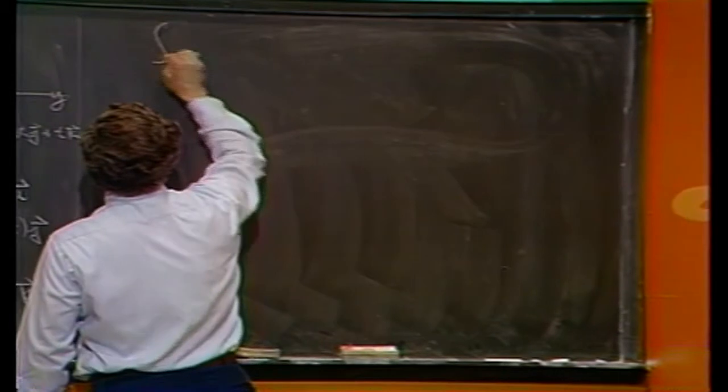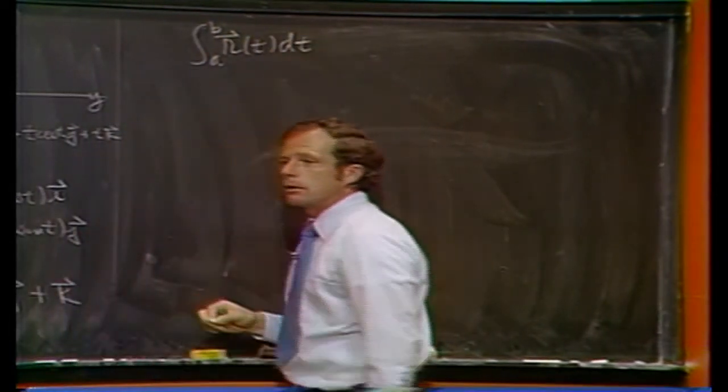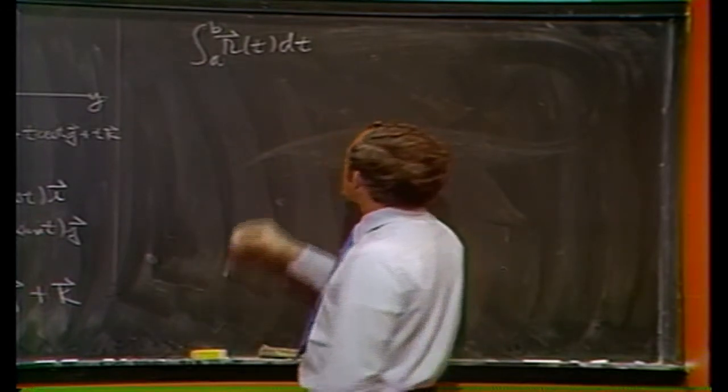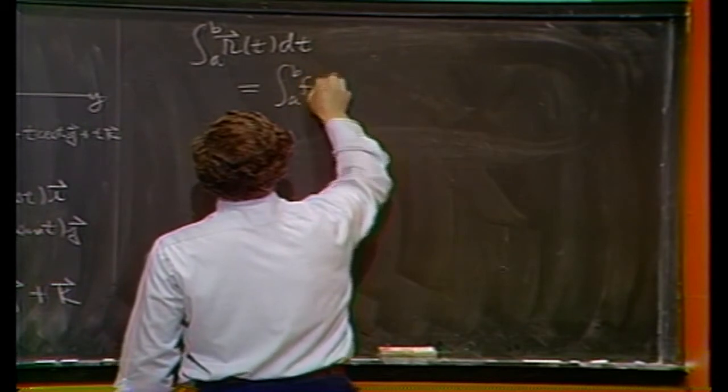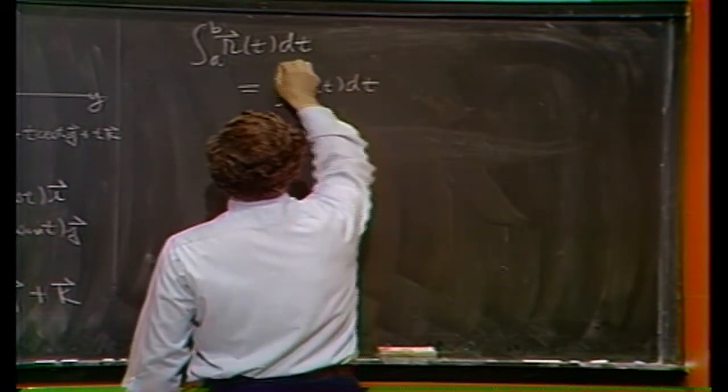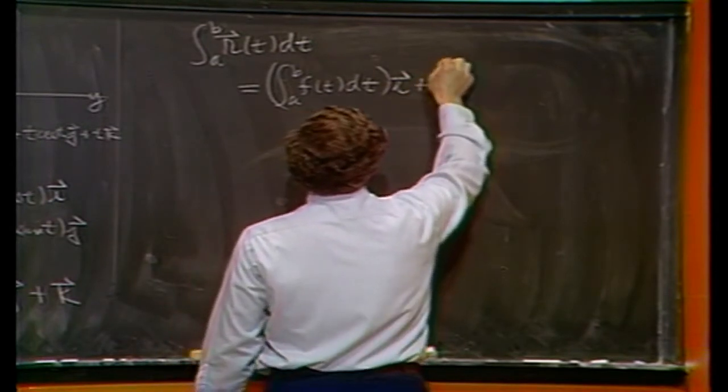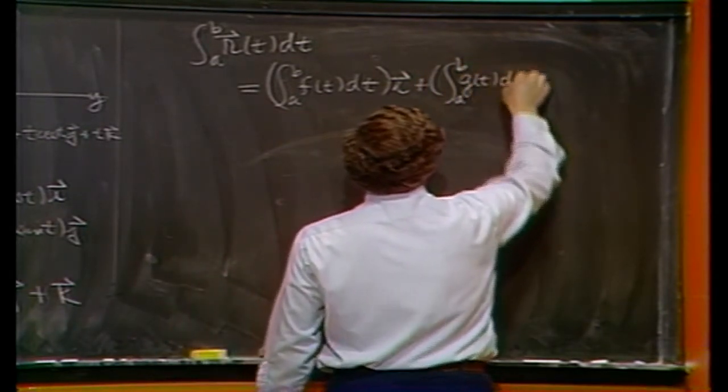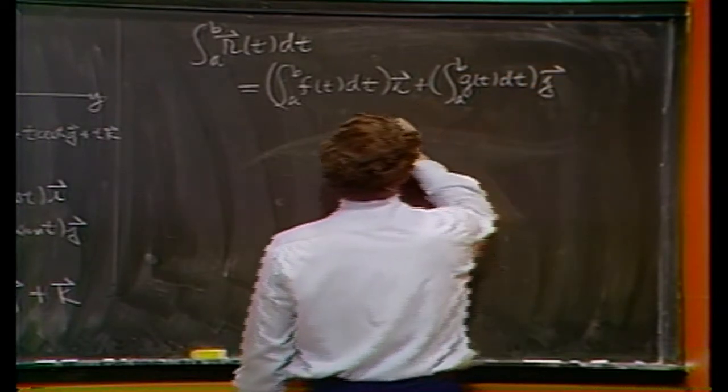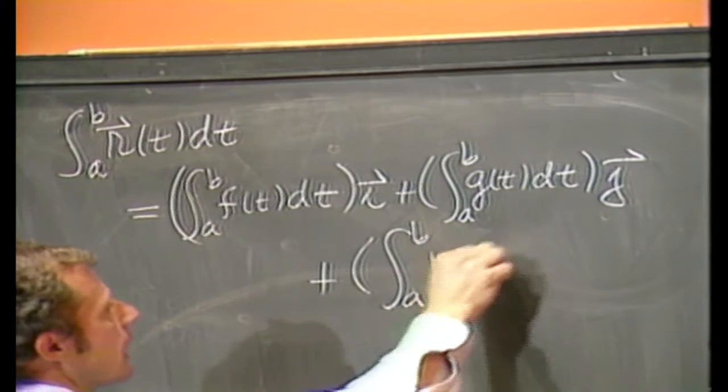You can talk about a definite integral of a vector function. And the rules are basically just the same. Using our same notation, it would be that component, a number. This component gives you the second number. And lastly, the last component would look like this.